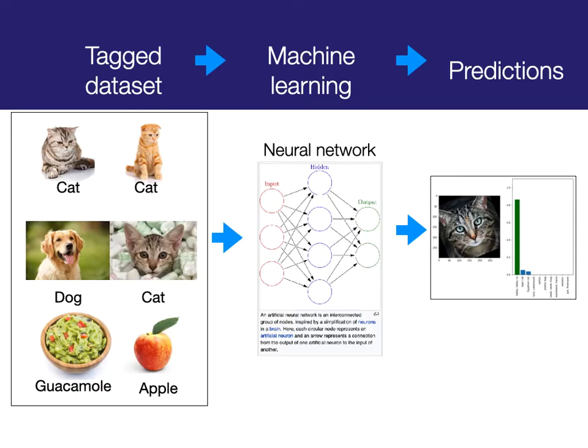To understand how this is working, let's look at how neural networks and machine learning work — this is a very simple, basic understanding. First, you have to feed the system a tagged data set; this is the most common approach. You take a set of pictures and they're tagged — for instance, this is a cat, this is a dog, this is guacamole, this is an apple. Or your data set might have different tags: this is a man, this is a woman, this is somebody smiling.